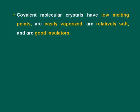Covalent molecular substances have low melting points and are easily vaporized — they may be gases, liquids, or solids with low melting points and low boiling points. If they are solids, they are relatively soft, like wax. They are also good insulators. So covalent molecular substances are characterized by low melting points, easy vaporization, softness, and electrical insulation.